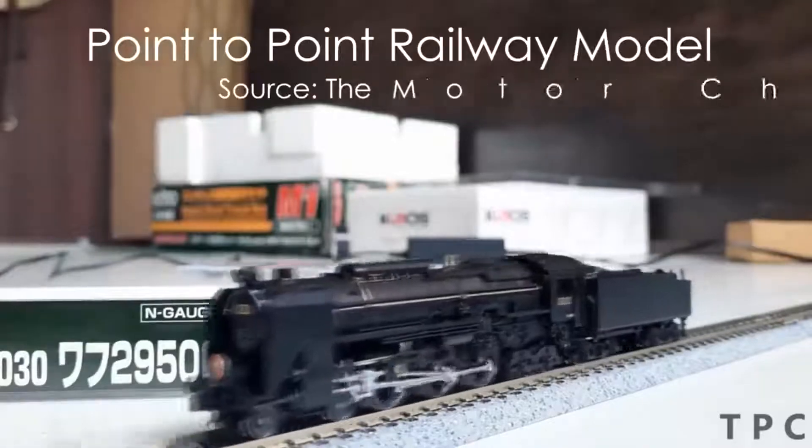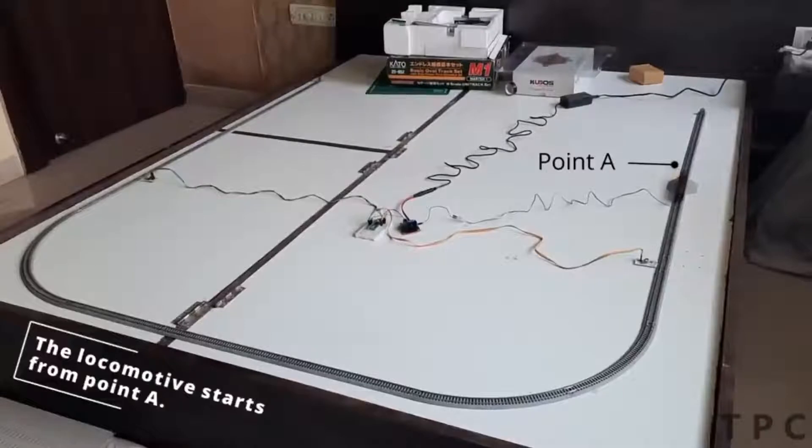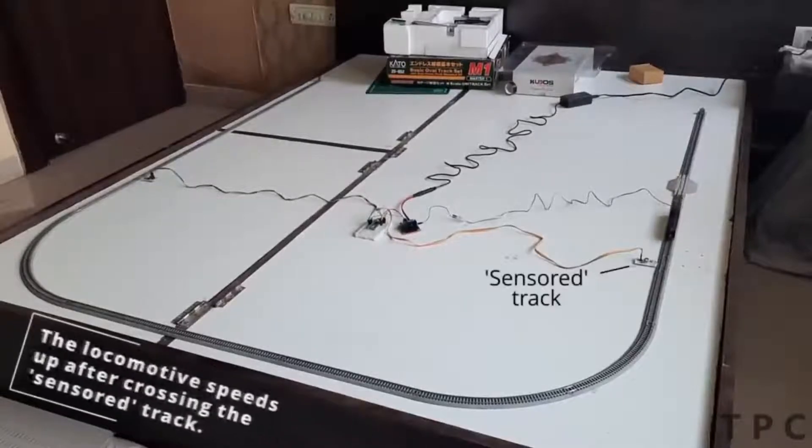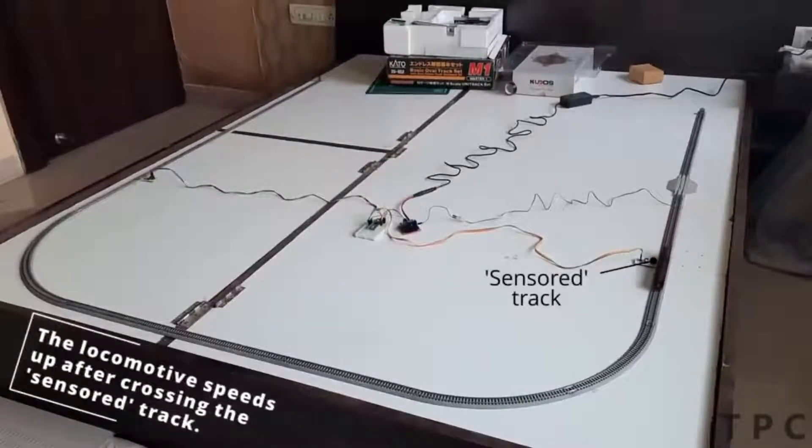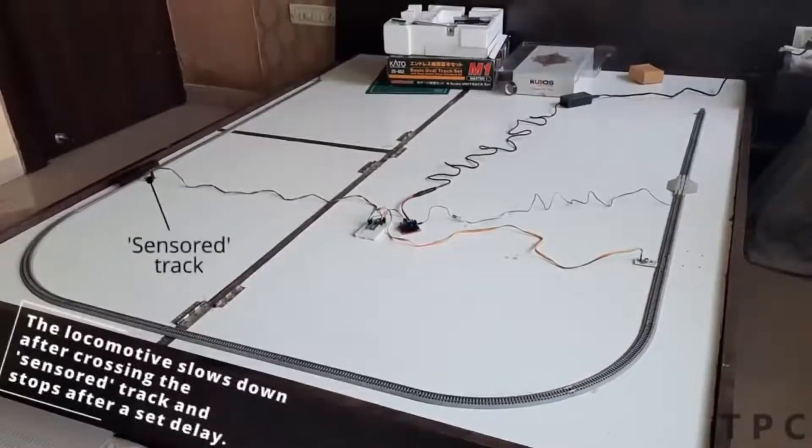This is a point-to-point railway model. The project demonstrates how a locomotive moves within two set locations automatically. The locomotive starts from its initial position at a slow speed. After crossing a sensor, the locomotive picks up speed and heads toward its destination.